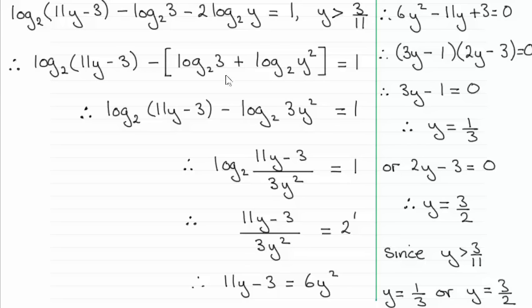Now that I've got this stage I can group together these two terms. Remember with addition this is the same as the log of 3 times y squared in base 2. So that creates one term there. And now we can pick up on the subtraction idea of logs that this reduces to dividing. So you'll see that I've divided here the log of 11y minus 3 over 3y squared in base 2. So I've now got my equation down to two terms, one term on each side of the equals.